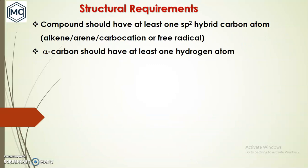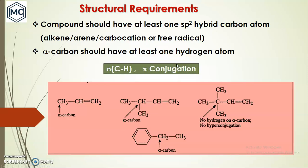What are the structural requirements for the hyperconjugation effect? First, the compound should have at least one sp2 hybridized carbon atom — that is, an alkene, alkyne, benzene, carbocation, or free radical having sp2 hybridized structure. Second, there should be at least one alpha hydrogen atom on the alpha carbon. These two conditions should be satisfied.